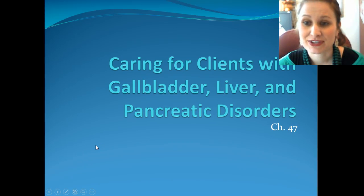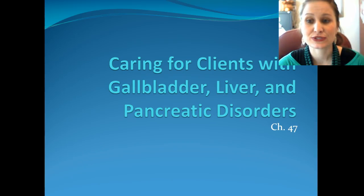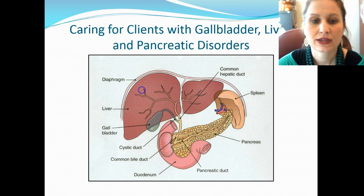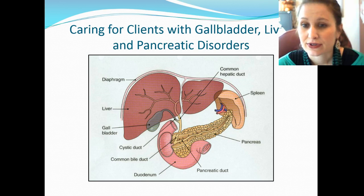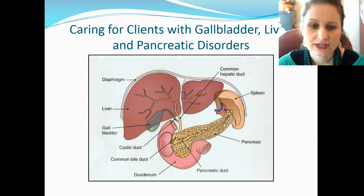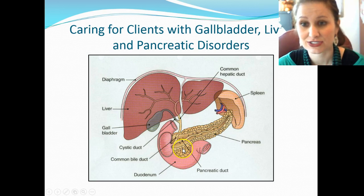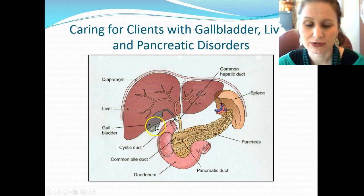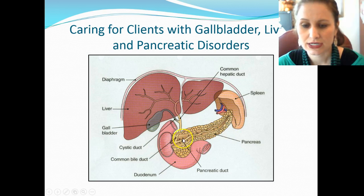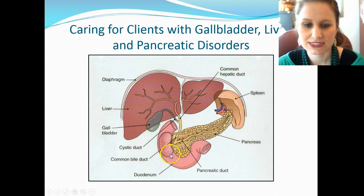Today we're talking about Chapter 47 — caring for clients with gallbladder, liver, and pancreatic disorders. Here is a diagram showing our diaphragm, liver with the common hepatic duct draining from the liver and gallbladder, and the pancreas, which is responsible for creating insulin. The spleen is also visible, and everything comes down into the common bile duct and goes into the small intestine.